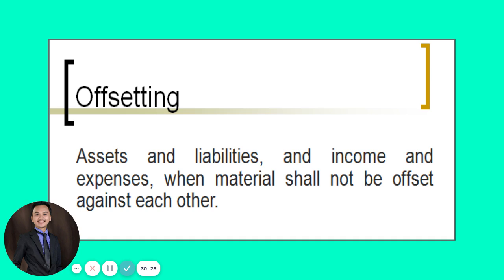Offsetting assets and liabilities, or income and expenses, when material, shall not be offset against each other. Offsetting is generally not permitted under PFRS. However, offsetting may be done when required or permitted by another PFRS — for example, in accounting for long-term construction contracts, offsetting of current assets and current liabilities is allowed.